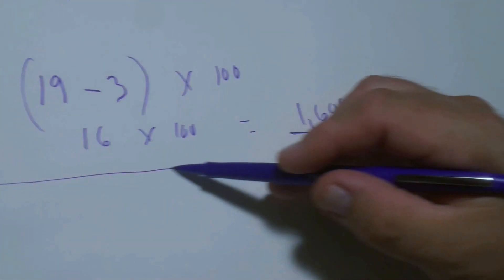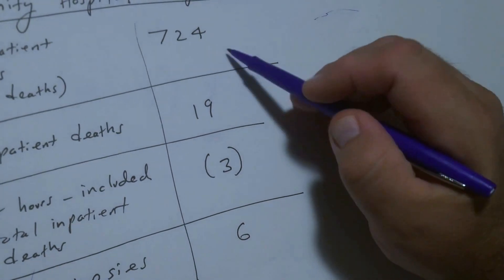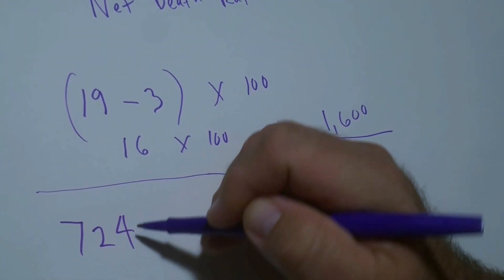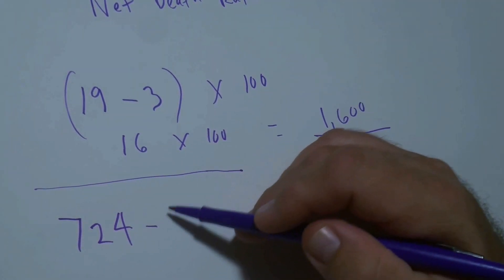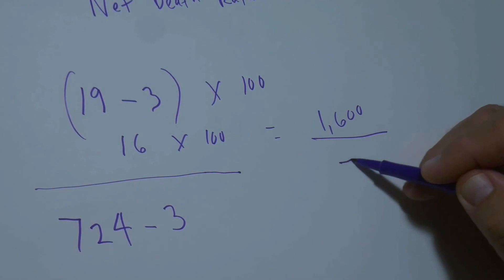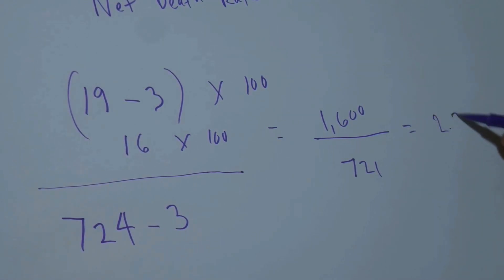And our denominator, we're going to take the same 724 total inpatient discharges including deaths and subtract out that same 3. So on our denominator we have 721. So 1600 divided by 721 is equal to 2.22. And since we multiplied it by 100, we know that's a percentage. So our net death rate is going to be 2.22% for this community hospital.